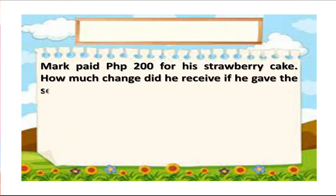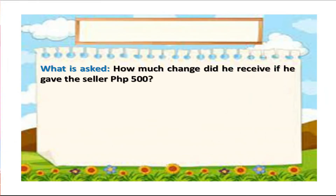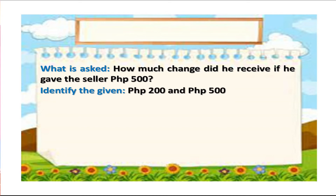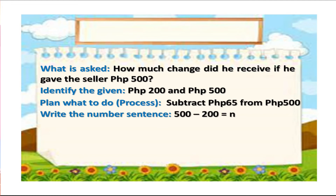Next. Mark paid 200 pesos for his strawberry cake. How much change did he receive if he gave the seller 500 pesos? Again, let's find what is asked: how much change did he receive if he gave the seller 500 pesos? Identify the given: 200 pesos and 500 pesos. Plan what to do or process: subtract 200 from 500. Write the number sentence: 500 minus 200 is equal to n, where n is the difference.